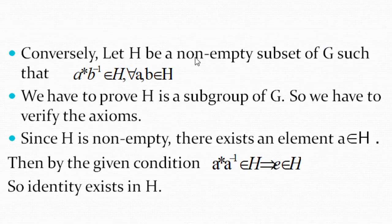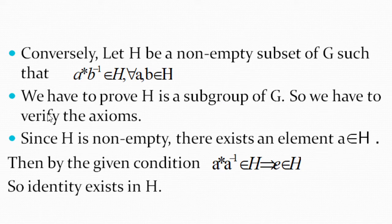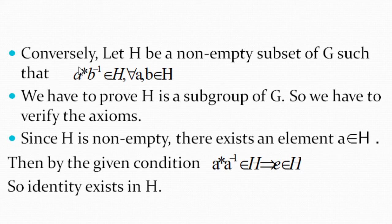Conversely, let H be a non-empty subset of G such that A * B⁻¹ belongs to H for all A, B belonging to H. We have to prove H is a subgroup of G, so we verify the axioms of group. Since H is non-empty, there exists an element A belonging to H. By the given condition, substituting B = A, we get A * A⁻¹ belongs to H. Since A * A⁻¹ = E, the identity E also belongs to H.